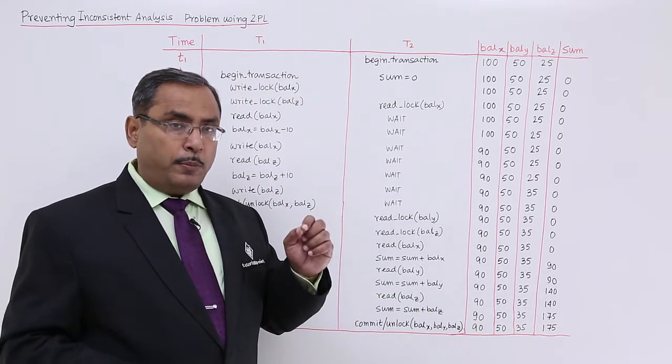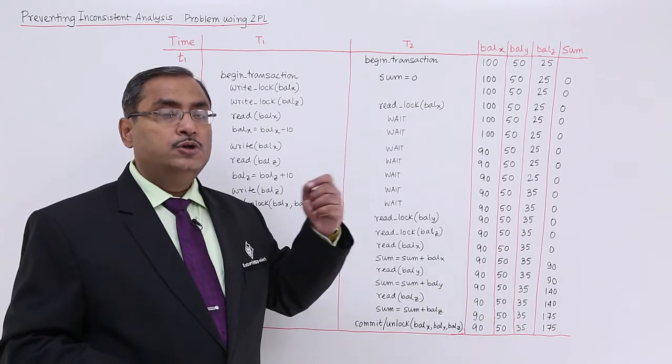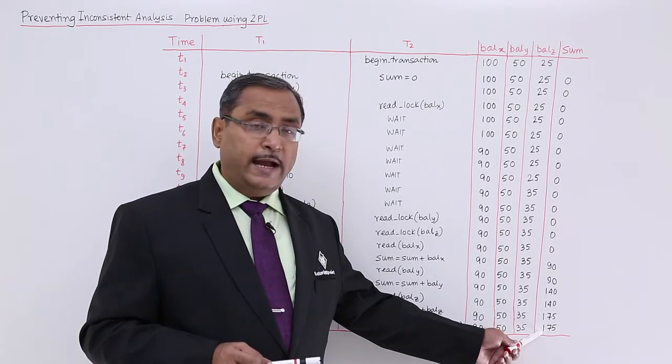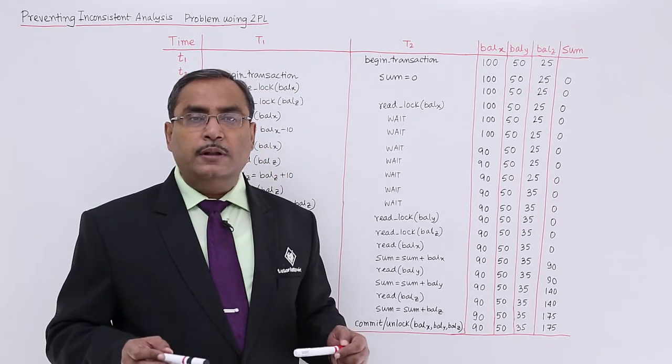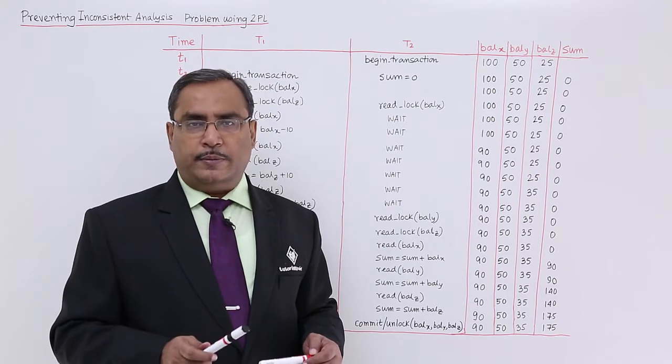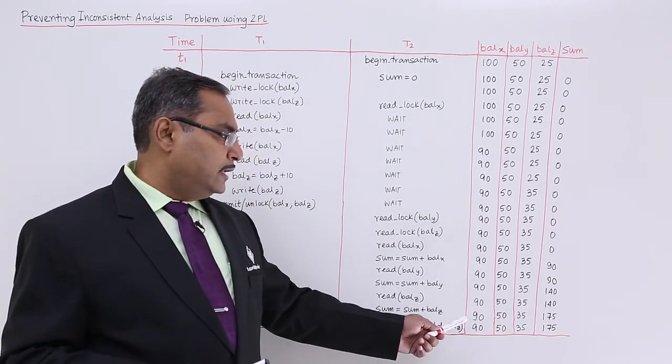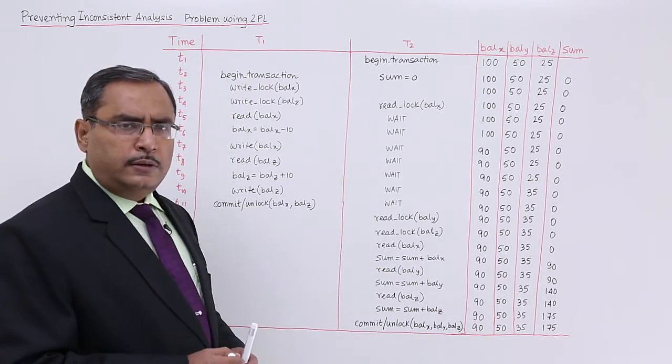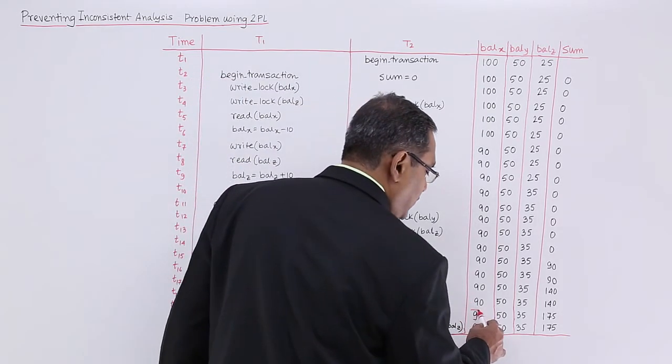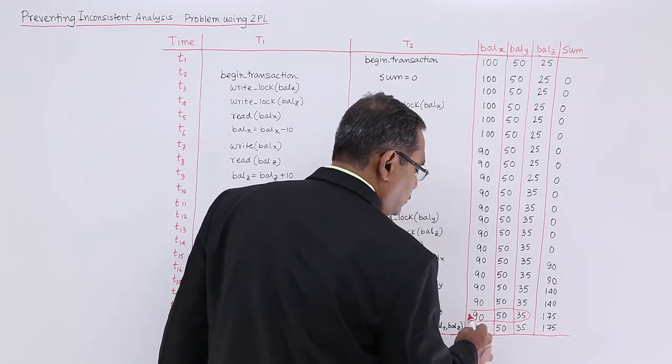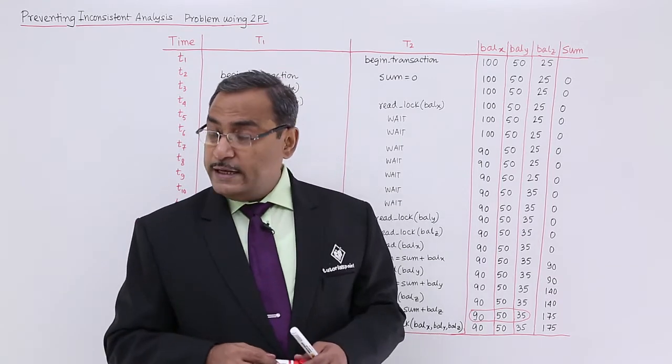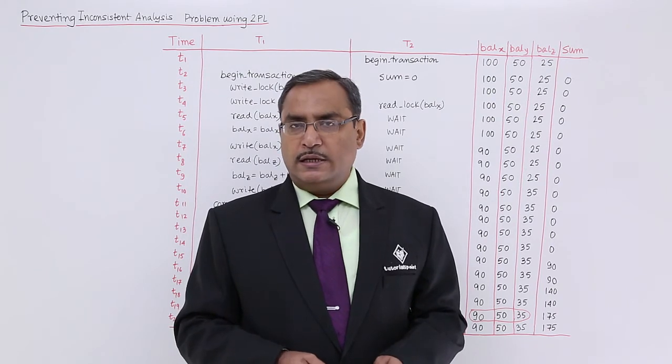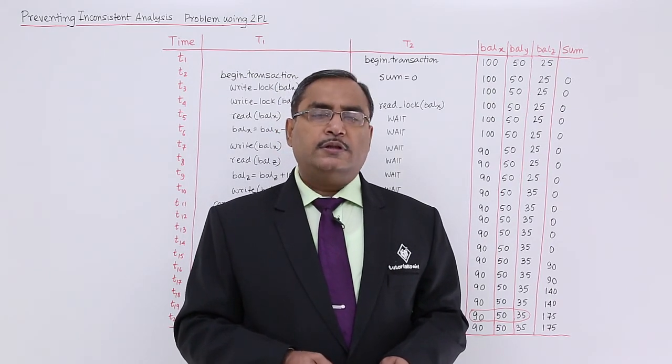Look at here what the problem we faced in our earlier videos to discuss inconsistent analysis problem. We had this particular data items getting added, but those data items were not available in the single instance of the database. But here you see, this 175 is nothing but 90 plus 50 plus 35, and which is available in the same instance of the database. It is available in the same instance of the database, so there is no inconsistency. In this way, prevention of inconsistency problem has been done using 2PL. Thanks for watching this video.